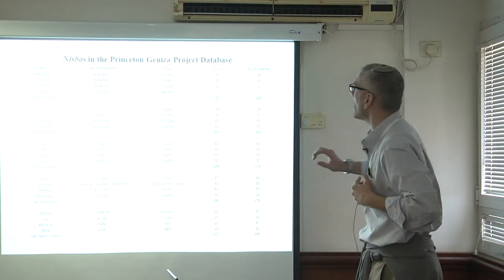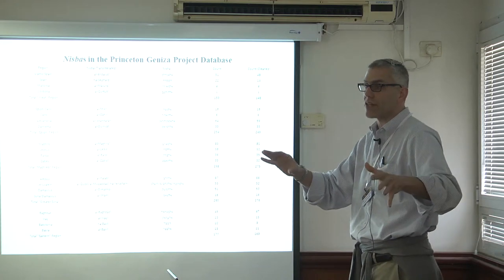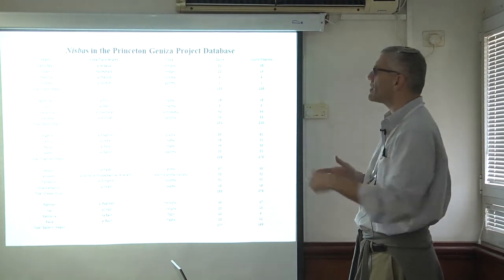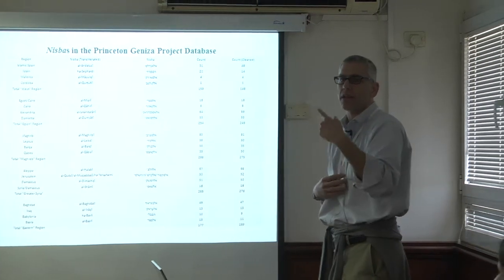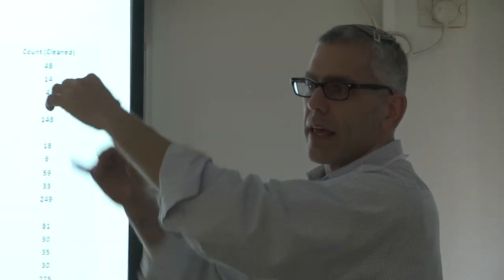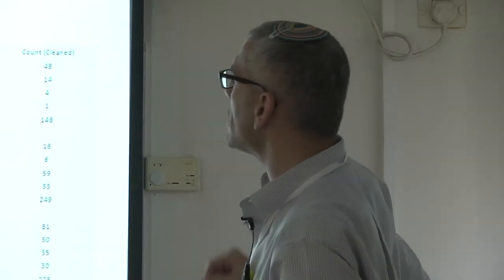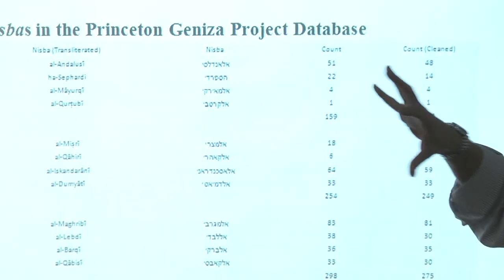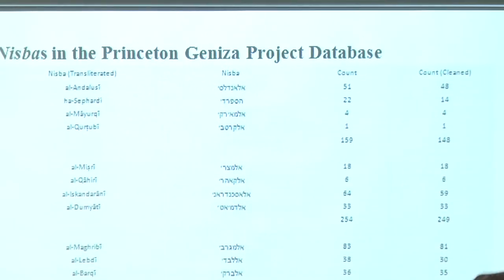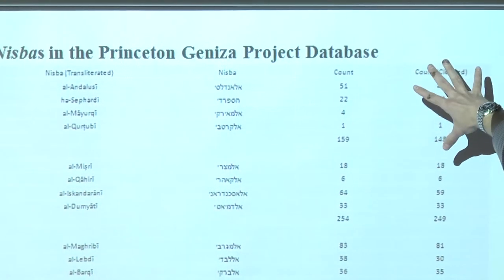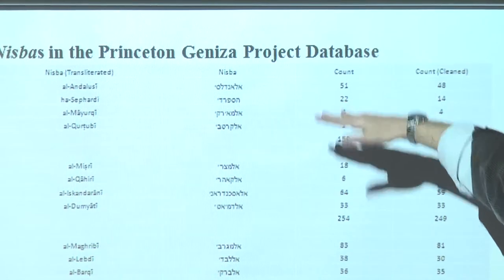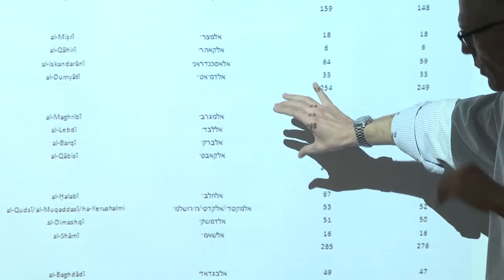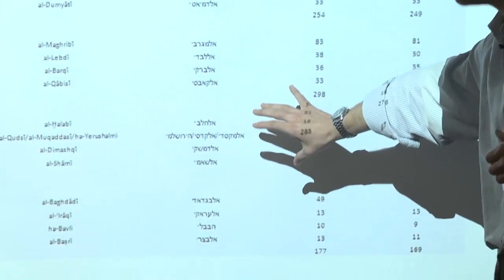Let's look at some results. Having collated the results of these 4,000 or so documents, every time I found a Nisbah I put the name in a list and took the Nisbah. I found about 55 Nisbahs and split them into various regions: what I call the West, Islamic Spain, Egypt itself, the Maghreb, and Northwest Africa.